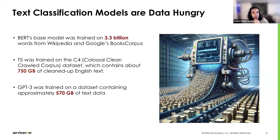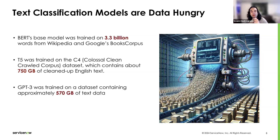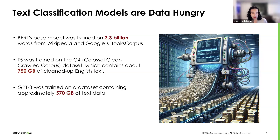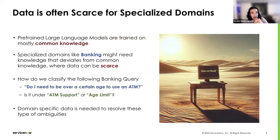One of the problems is that a lot of text classification models that work well are very data-hungry. For example, the BERT large language model, one of the earliest large language models in 2019, needed to be trained on around 3.3 billion words from Wikipedia and Google's book corpus. T5, which came after it, was trained on C4 — the Colossal Clean Crawled Corpus — which contains about 750 gigabytes of English text, just for one language. GPT-3 was trained on approximately 570 gigabytes of data, and GPT-4 has way more than that — they need a lot of data to work well.